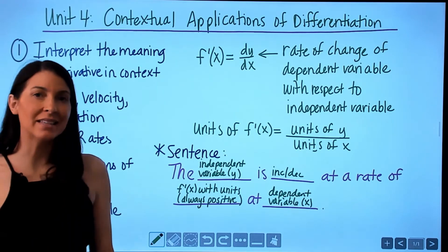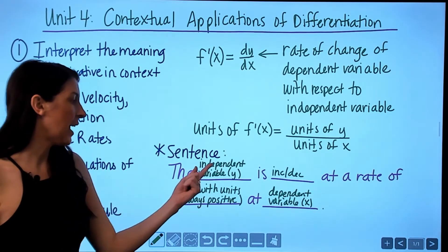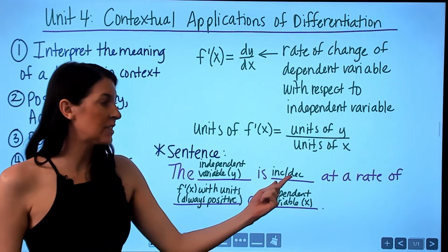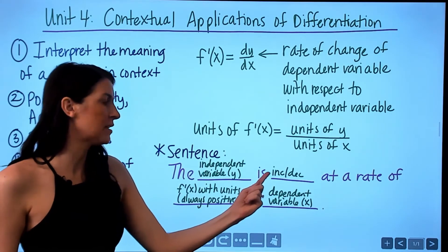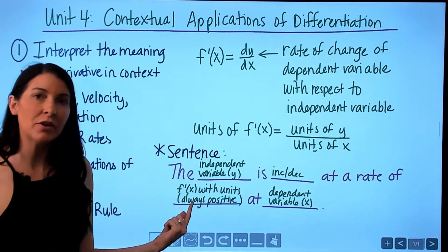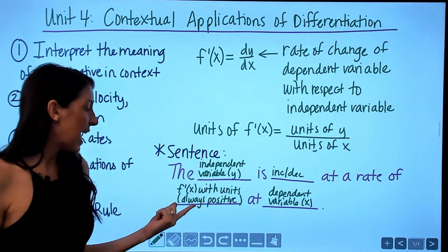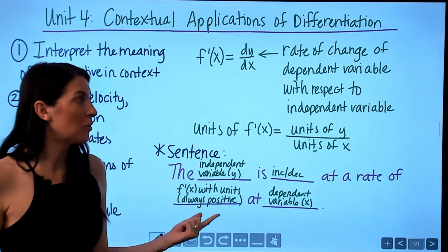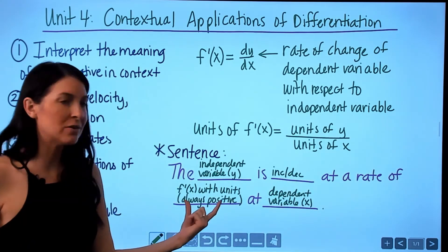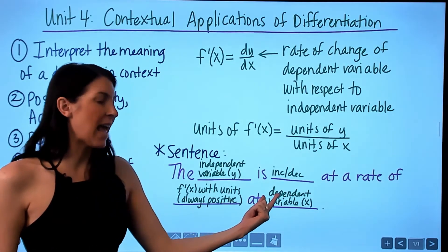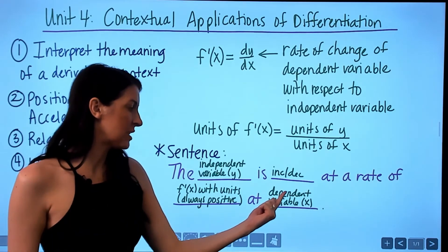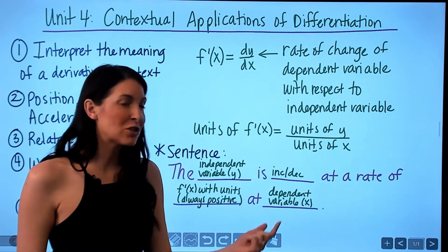For these types of problems, it's important to know how to write a sentence for your answer. The format is: '[dependent variable] is increasing or decreasing' — based on whether f'(x) is positive or negative — 'at a rate of [value with correct units].' Always give a positive value; if the derivative is negative, you say 'decreasing' but still use a positive number. Then finish with 'at [x value with units].'